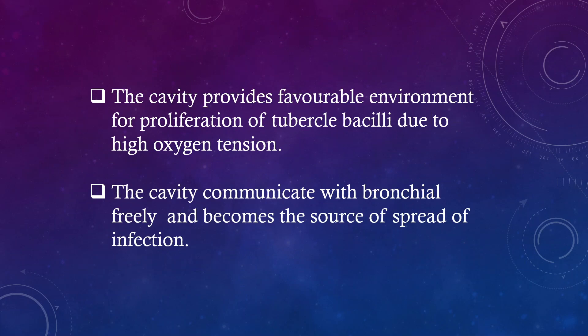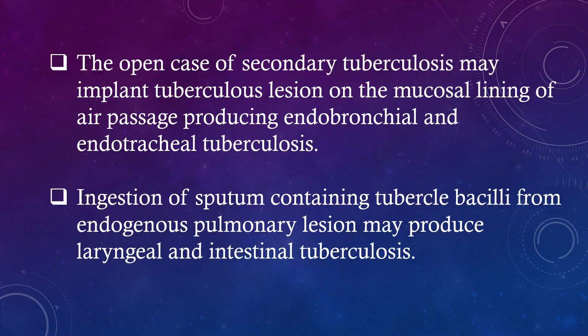The cavity provides a favorable environment for proliferation of tubercle bacilli due to high oxygen tension. The cavity communicates freely with the bronchi and becomes the source of spread of infection. The open case of secondary tuberculosis may implant tuberculosis lesions on the mucosal lining of the air passages, producing endobronchial and endotracheal tuberculosis. Ingestion of sputum containing tubercle bacilli from endogenous pulmonary lesion may produce laryngeal and intestinal tuberculosis.